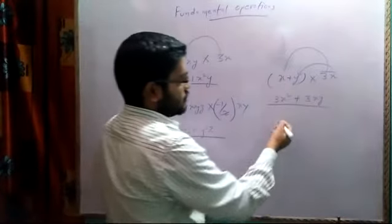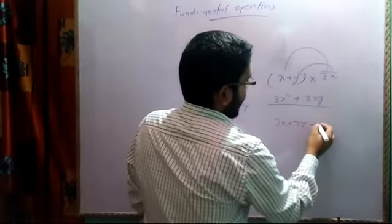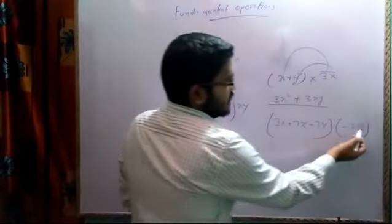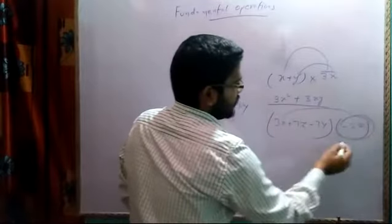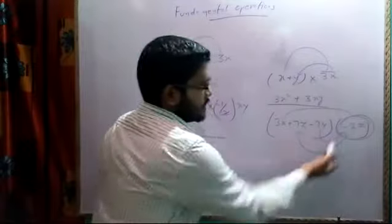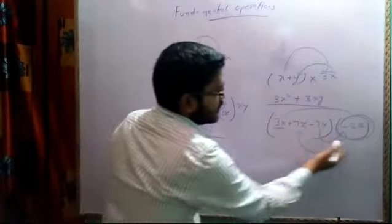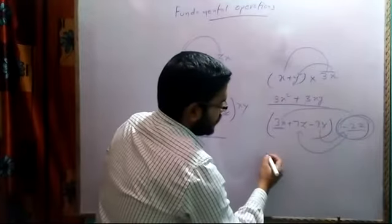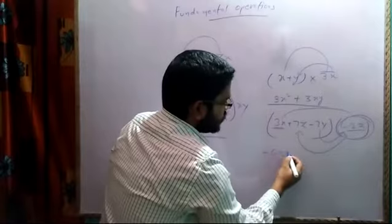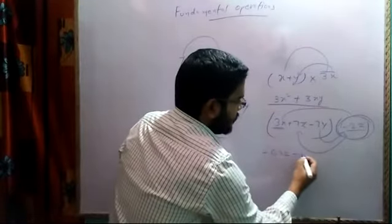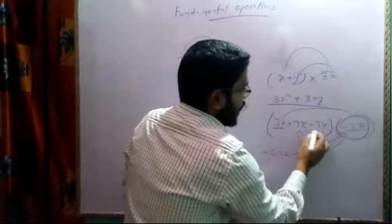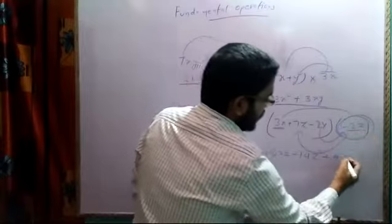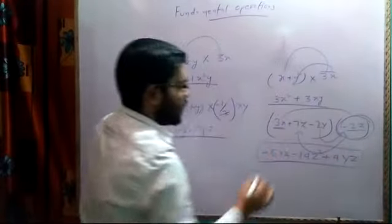Suppose I have 3x plus 7z minus 2y multiplied with minus 2z. The same approach applies: each term is multiplied with minus 2z. So 3x times minus 2z gives minus 6xz. Then 7 times minus 2 gives minus 14, and z times z gives z square. Then minus 2 times minus 2 is plus 4, and y times z gives yz.